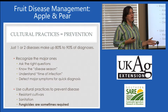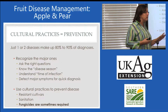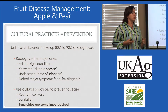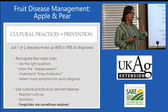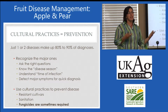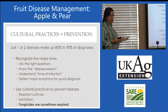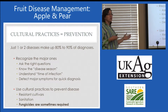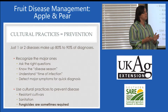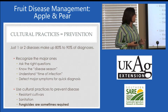For instance, fire blight is going to begin infecting during bloom. However, it's that shepherd's crook stage when you start hearing those complaints. That's coming in May and June when infection is really occurring in April. So knowing that time of infection is very different from symptom development when we're talking about diseases.